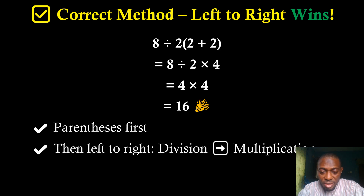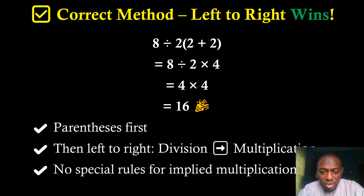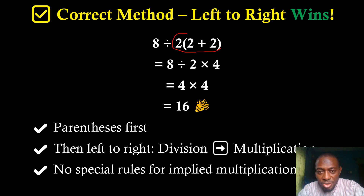To summarize: parentheses come first, then division and multiplication are handled left to right. There are no special rules for implied multiplication when solving expressions like this. When a number multiplies something in brackets, it does not take precedence over division. When you have division and multiplication together, solve from left to right.